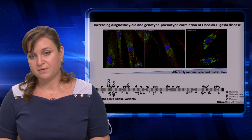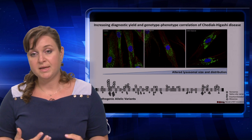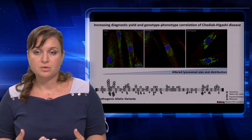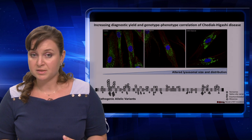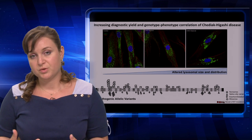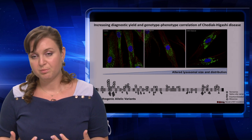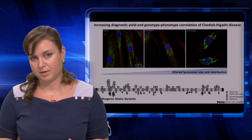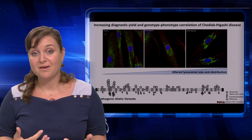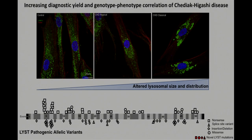Missense and milder mutations found in atypical CHD patients can be due to the substitution of a single amino acid, and can result in a partially functional protein product. Through our NIH clinical protocol, we have discovered 19 novel LYST mutations from 13 patients in our cohort so far.